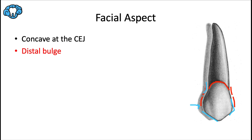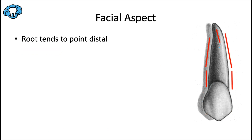The root apex most often points toward the distal, like most teeth. To be precise: the apex points distal about 58% of the time, straight about 24% of the time, and mesial about 18% of the time. You can also appreciate how large and strong the root looks — again, it's the longest root of all teeth in the mouth.